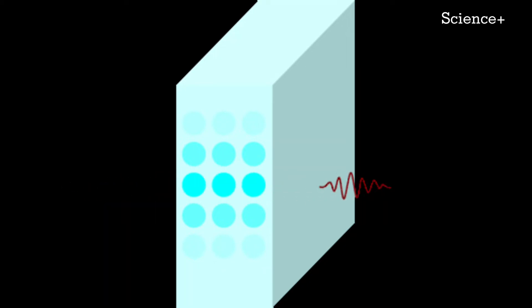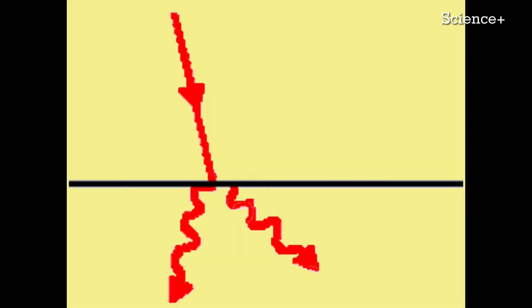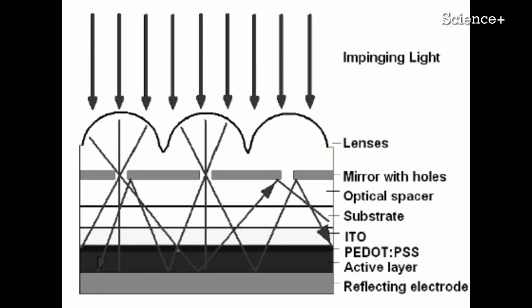There have already been attempts to improve the absorption of materials. For example, the material can be placed between two mirrors. The light is reflected back and forth between the two mirrors, passing through the material each time and thus having a greater chance of being absorbed.